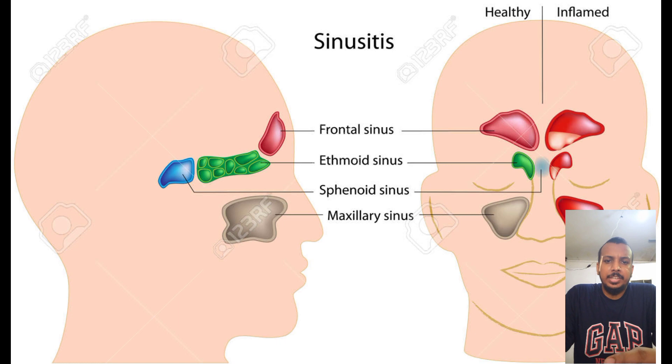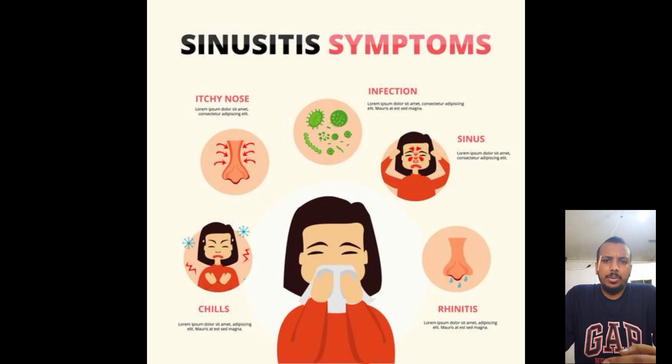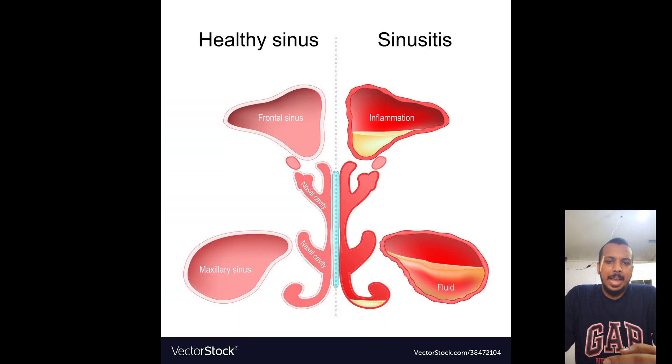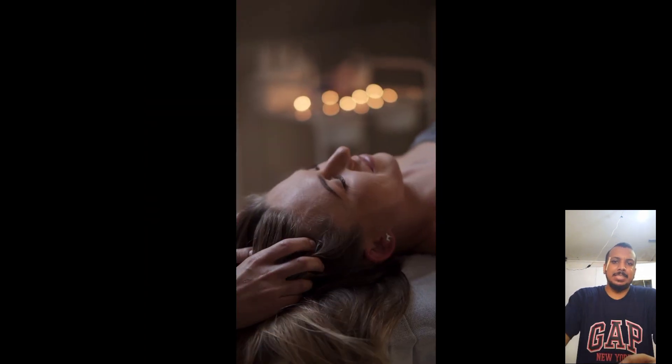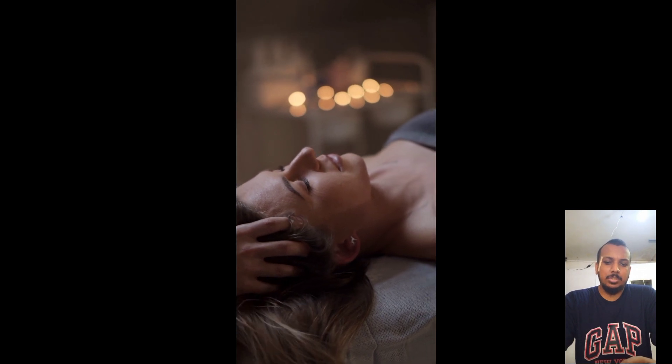There are a few types of sinusitis. Number one, acute sinusitis usually starts with cold-like symptoms such as runny nose, stuffy nose, and facial pain. Number two, subacute sinusitis lasts four to twelve weeks. Number three, chronic sinusitis lasts for more than 12 weeks. Number four, recurrent sinusitis happens several times a year. Number five, pan sinusitis affects all the sinuses, not only one or two.